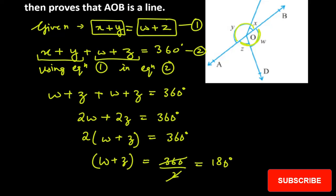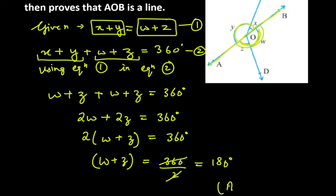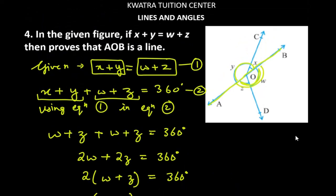So what does it mean that w plus z is 180 degree? This means that these are our two angles in a straight line. So yes, this proves that AOB is a line. So this is how you can attempt this question. Let's now move to question number 5.